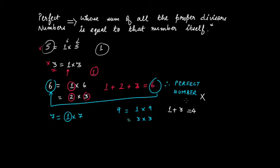You might be wondering what the next perfect number is after six. The next perfect number after six is 28. Between six and 28, there are no other perfect numbers that satisfy the condition. Let's verify this.